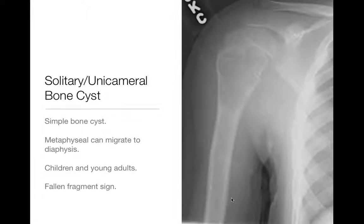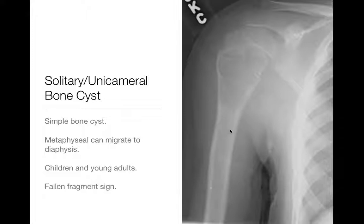Next, the solitary or unicameral bone cyst — a simple cyst filled with fluid. They originate around the metaphysis and can migrate into the diaphysis over time. You'll see these in children and young adults. Proximal humerus is a common location. Here's a child with a geographic lytic lesion in the metaphysis of the proximal humerus, with a pathological fracture and a fallen fragment sign — a piece of bone floating in the fluid-filled cyst. That fallen fragment sign is classic for unicameral bone cyst.